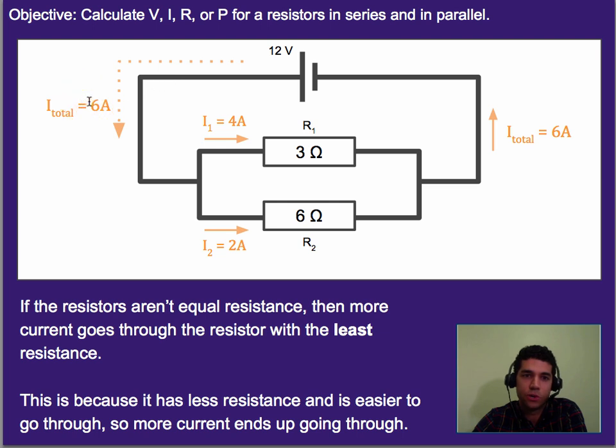Notice again though, that the total current coming in, 6 amps, is equal to the total current flowing through both parts and is equal to the total current afterwards. Now it'll split up and divide into different parts, but it always comes back together and is still the same total.